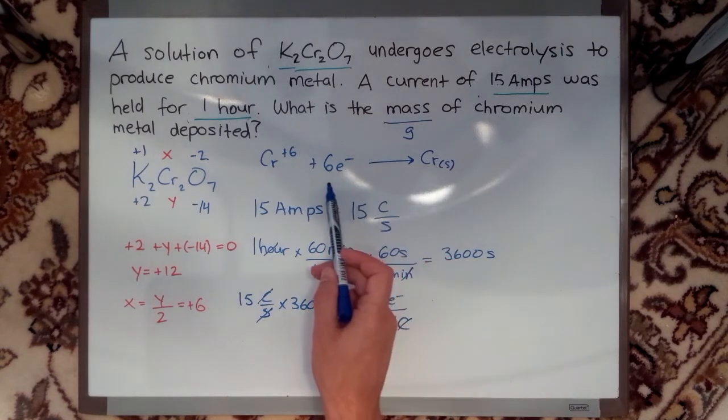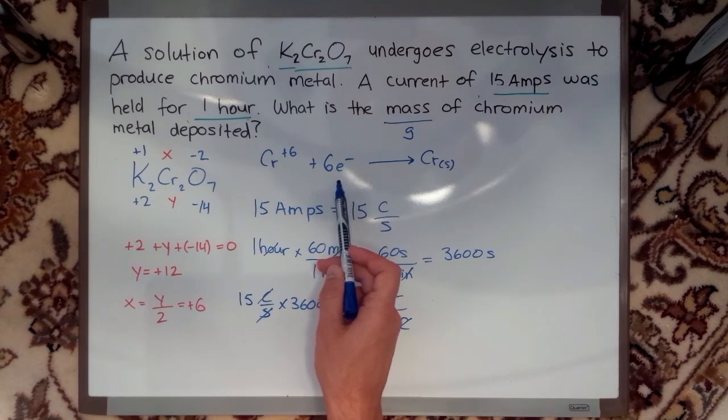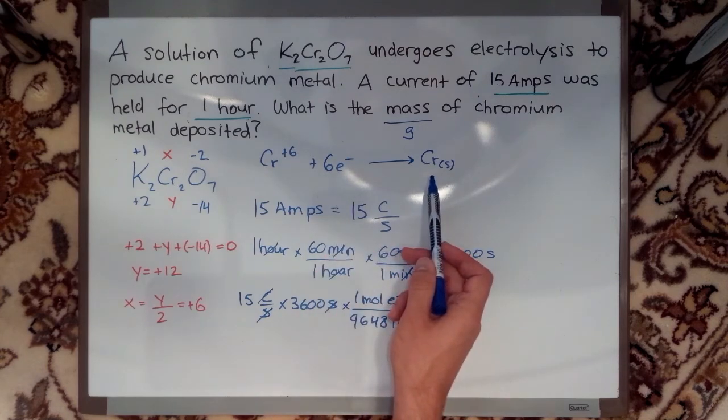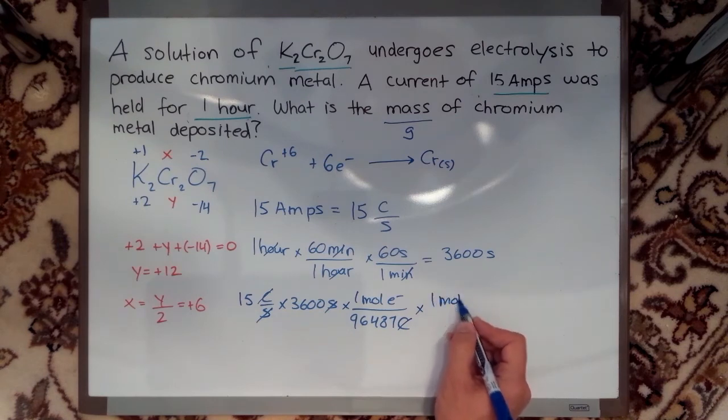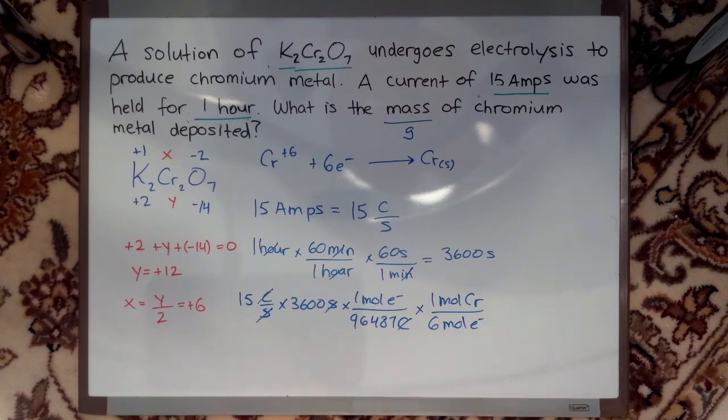Now I'm left with moles of electrons. But you see, my equation tells me for six moles of electrons, I make one mole of chromium. So let's get rid of that unit. My moles of electrons cancel out.